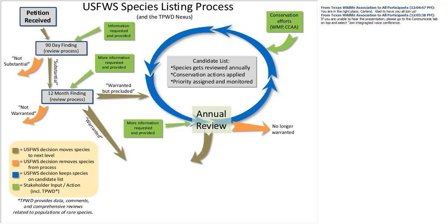Twelve months after the petition is received — which again can take years due to the backlog — Fish and Wildlife Service is obligated to make a decision and publish findings as 'not warranted' (no further action), 'warranted' (species listed after a 30-day Federal Register commenting period), or, more commonly, if higher-priority listing activities preclude the listing, a species may become a candidate for listing. Candidate species get reviewed annually and can stay in that loop for quite a long time because of the petition backlog.